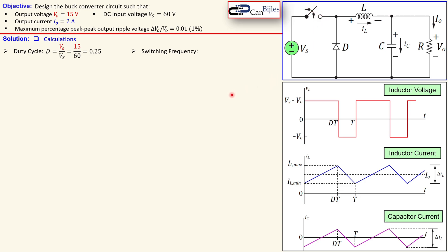The switching frequency can be any convenient value for the components. In this case I have selected a switching frequency of 100 kilohertz. Any other value around this range will generally work fine. The next step is determining the peak-to-peak inductor current.